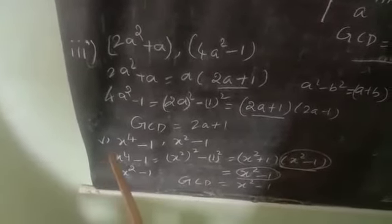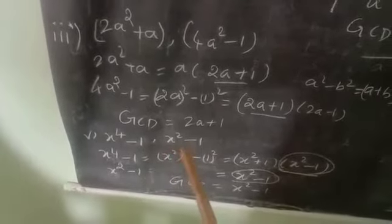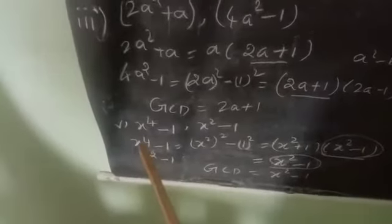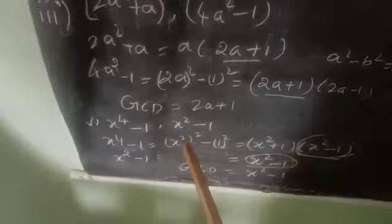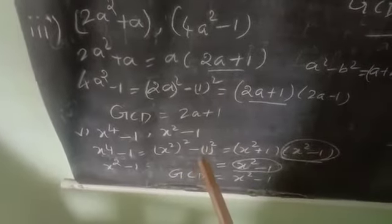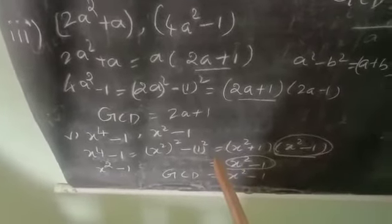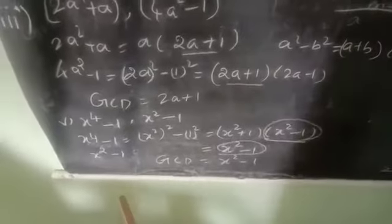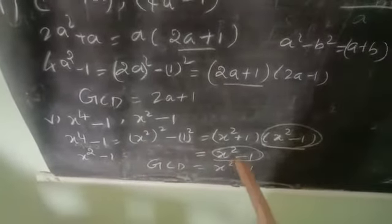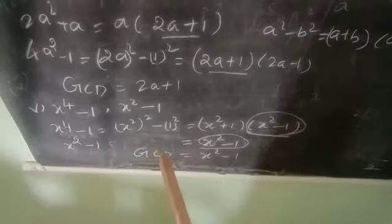Now we see the fifth sub-question: x⁴ − 1 and x² − 1. First we find out the linear factors of x⁴ − 1. x⁴ − 1 can be written as (x²)² − 1², and using the identity a² − b² = (a + b)(a − b), this becomes (x² + 1)(x² − 1). The second term is x² − 1. So x² − 1 is common to both terms, and the GCD of x⁴ − 1 and x² − 1 is x² − 1.